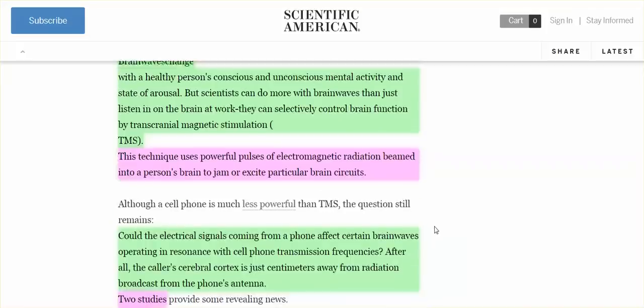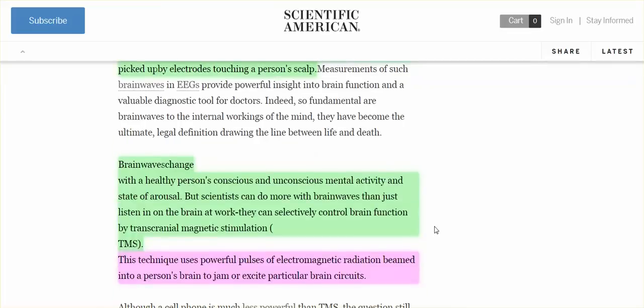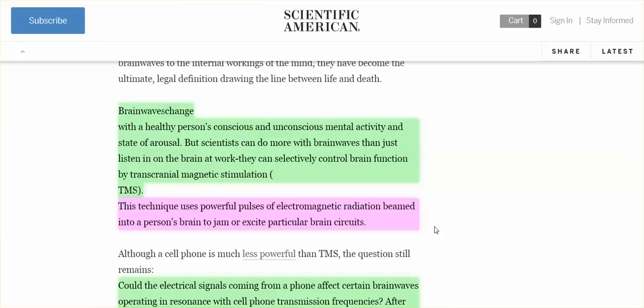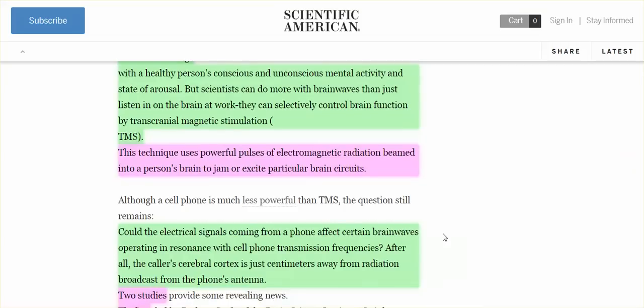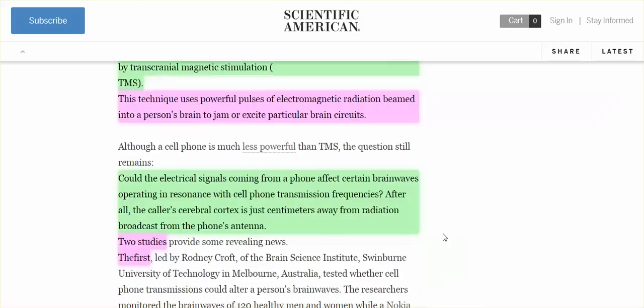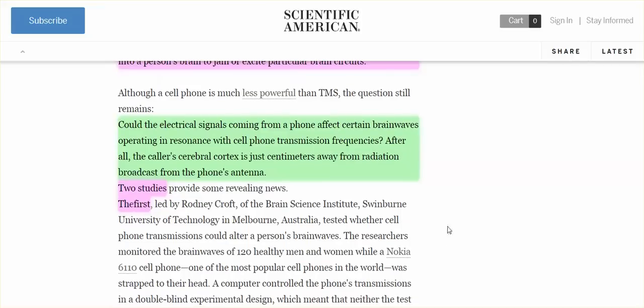So, scientists can do more with brain waves. Could the electrical signals coming from a phone affect certain brain waves operating in resonance with cell phone transmission frequencies? In other words, resonance. Your particular brain waves in your brain, do they resonate with the frequencies coming out of your cell phone? Yeah, they do.